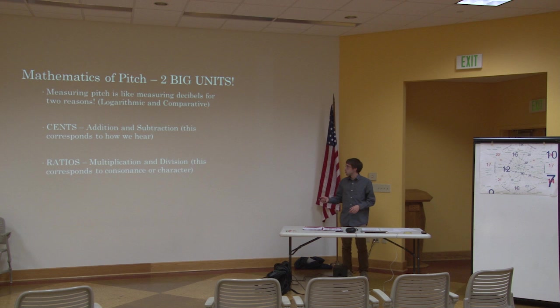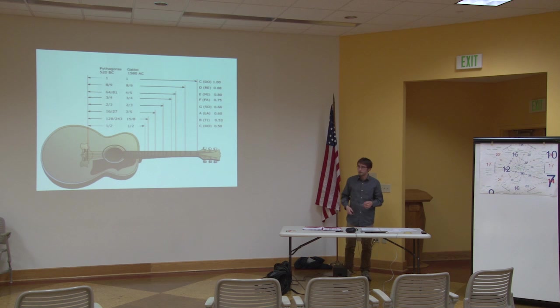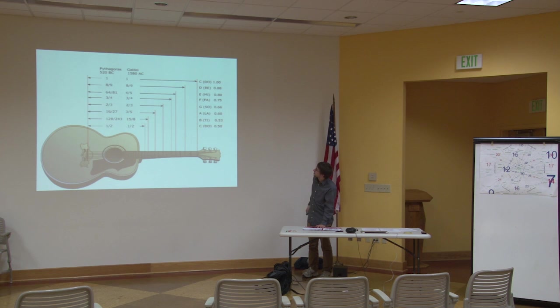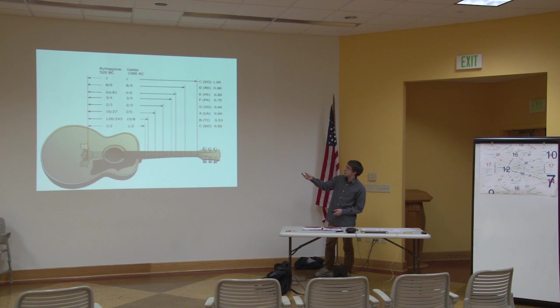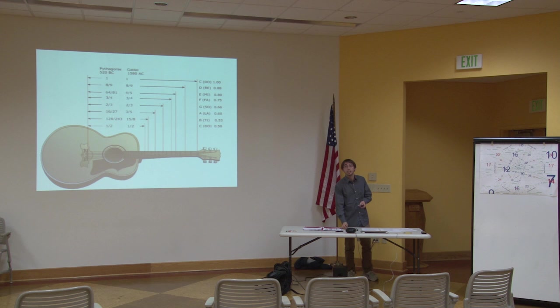Ratios are written in fractional form corresponding to consonance and character. For example, with Pythagorean tuning on a guitar: these ratios aren't things you add and subtract — they're multiplications of distances. You need to invert them when talking about physical lengths. For instance, 9/8 is the fraction for a major second in frequency terms. If I have a length of pipe or a guitar, I need 8/9ths of that to get a major second higher — they work inversely, but both operate using ratios.